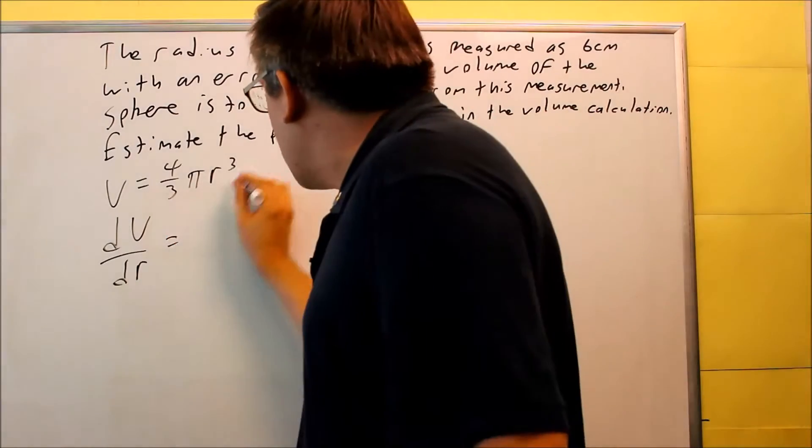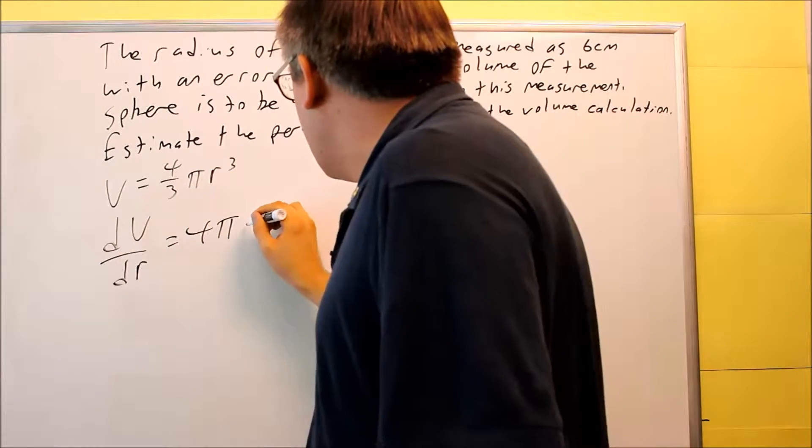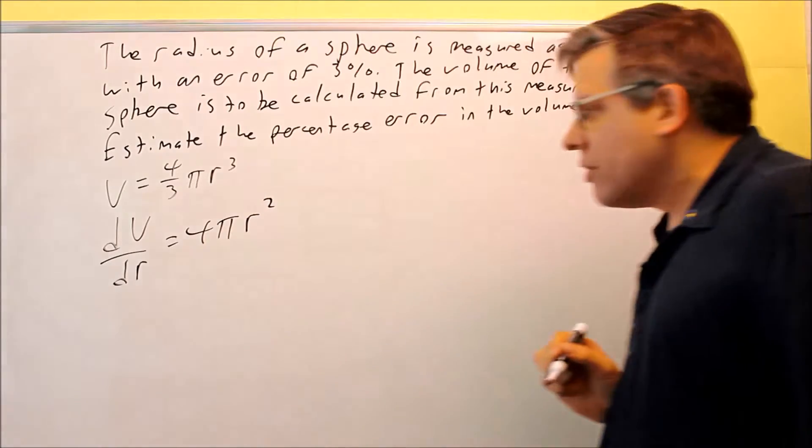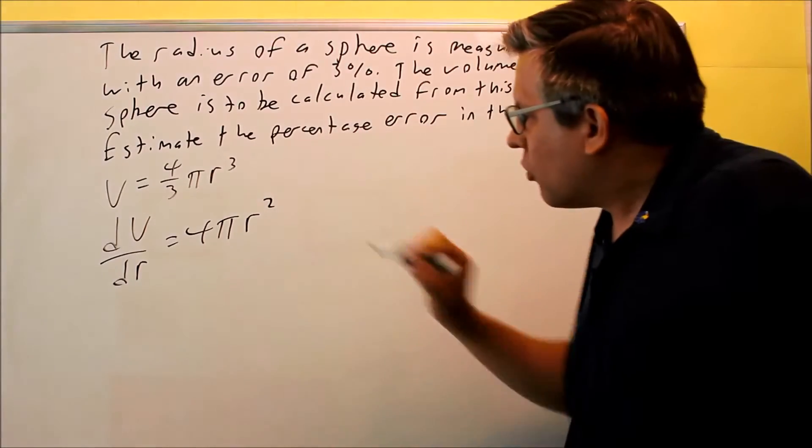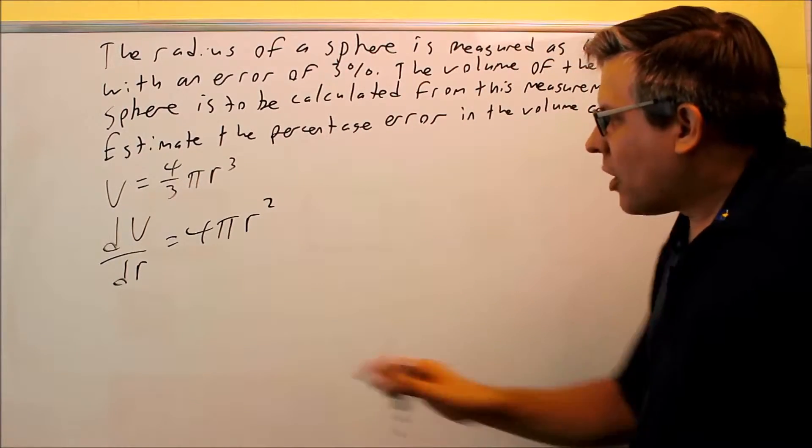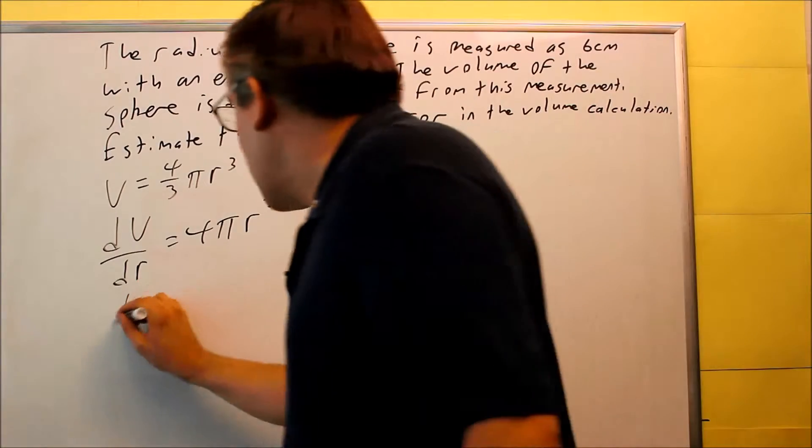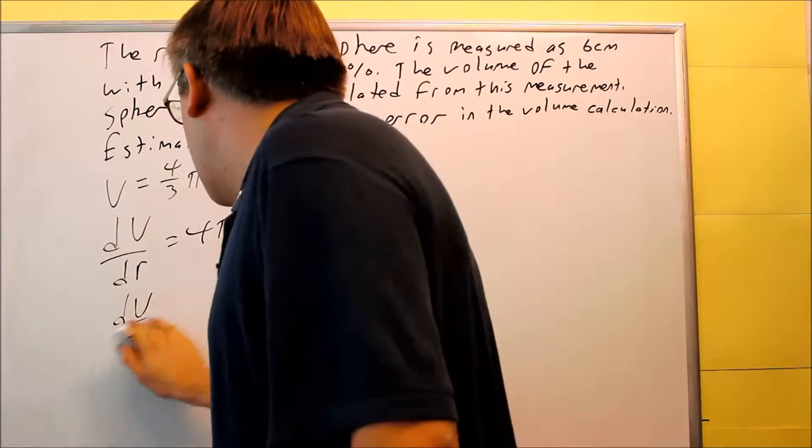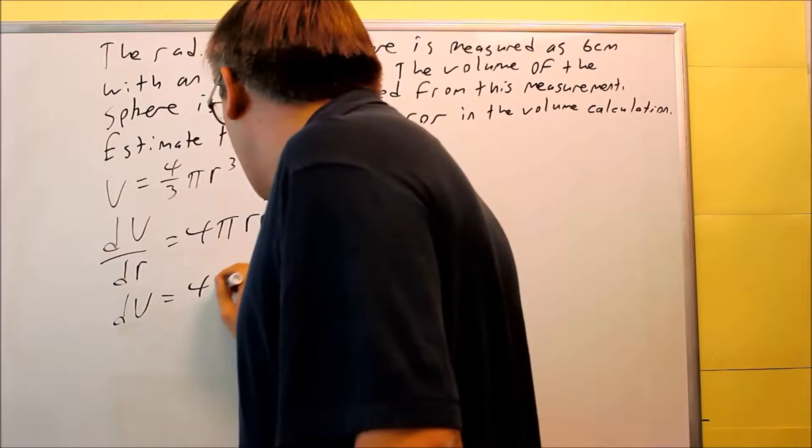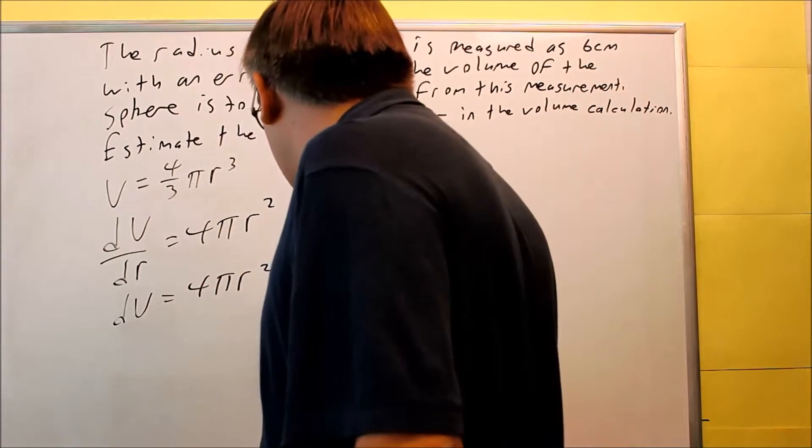When I do that, 3 comes down here, I get 4π r squared by using the power rule. And if I multiply both sides by dr, I get dV by itself is 4π r² dr.